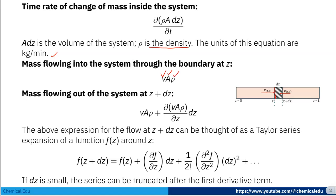Mass flowing out of the system at z + dz is vAρ + ∂(vAρ)/∂z·dz. The mass flow at this boundary is vAρ plus ∂(vAρ)/∂z times dz.